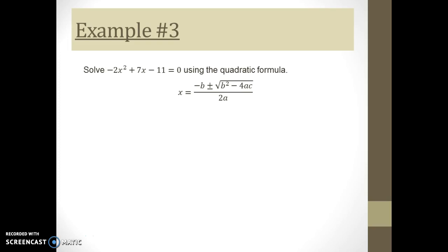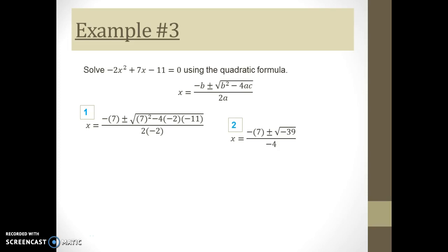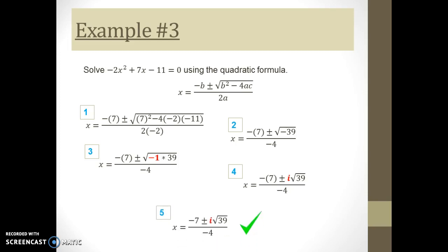Here's the in-class example. We solve it using the quadratic formula: plug A, B, and C in, then figure out what's underneath the radical — it turns out to be negative 39. I know I need to factor out negative one. Now, looking at 39: are any of its factors perfect squares? If you do a factor tree of 39, you'll find that none of its factors are perfect squares. So this simplified expression is our final answer.